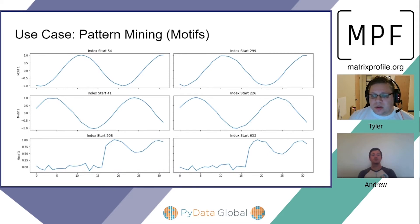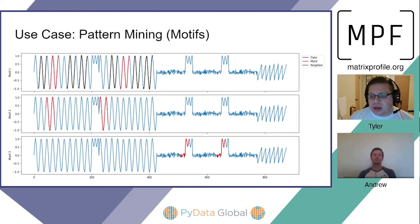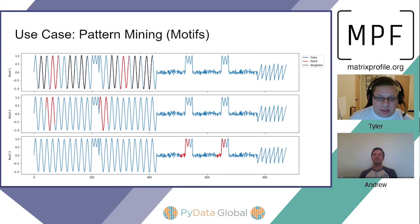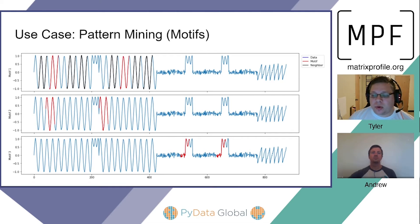Looking at it in close-up, you can see one motif pair found, with the small sub-sequences of those motif pairs plotted. From a zoomed-out view relative to the time series, the first motif is highlighted in red, while neighboring sub-sequences are highlighted in black. These neighboring sub-sequences can be the second, third, fourth, or fifth degree — this is all parameter tuning. The second and third motif pairs don't have any neighbors based on the parameters we set.